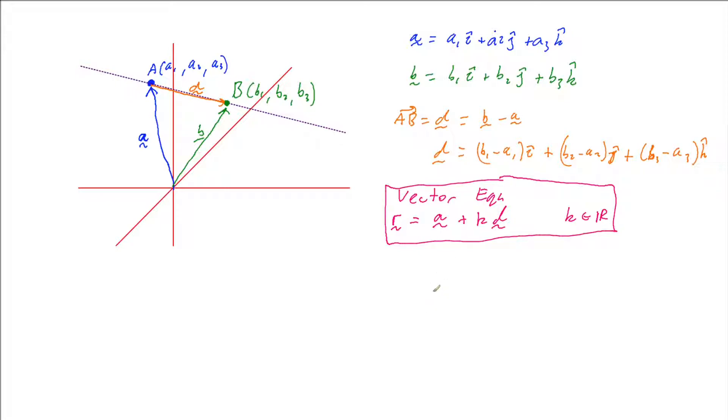I can also look at breaking this up into its components. So A is defined as A1i + A2j + A3k and D is defined up here which we created. So if I play around with our vector R here, I can get A1i plus A2j plus A3k plus k lots of our vector D here, which is B1 minus A1i plus B2 minus A2j plus B3 minus A3k.